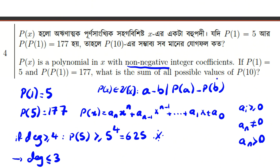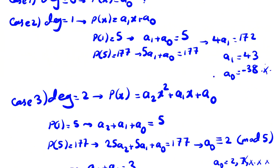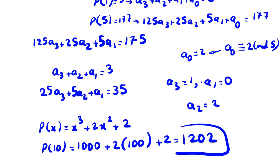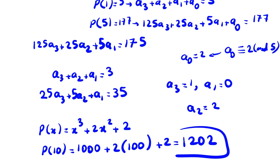We have found only one valid case, so p of 10 = 1202. The problem asks for the sum of all possible values of p of 10, and since there is only one possible value, the answer is 1202.